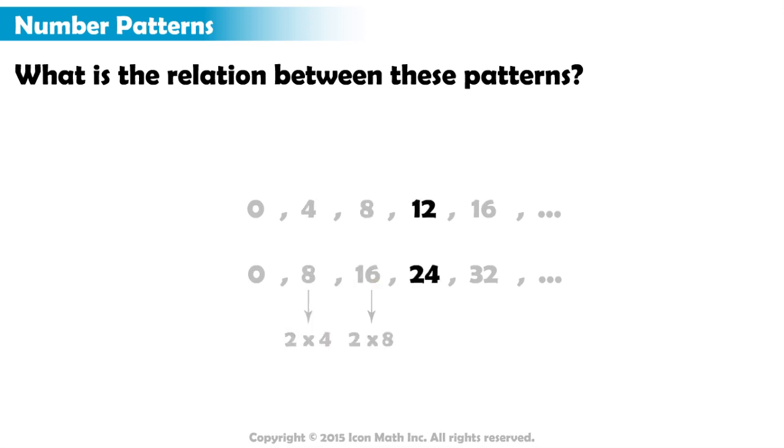Notice that for the next pair, the times two relation also works. We have twelve and twenty-four. Twenty-four is two times greater than twelve. And thirty-two is also two times greater than sixteen. And if we had more corresponding elements from both patterns, they will have the same relation. The number in the bottom will be two times greater than the number on top.